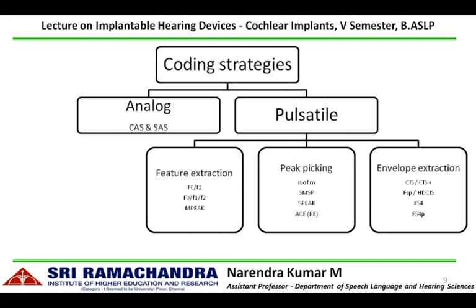F0, F2, F0F1F2, and multi-peak (M-peak) come under feature extraction strategies, which extract speech features like fundamental frequency and formant frequencies. Peak picking strategies select the maximum energy channel across different channels — the peak is picked up and only that information is delivered to the intracochlear electrode array. Envelope extraction strategies extract the channel output envelope and stimulate with biphasic pulses.